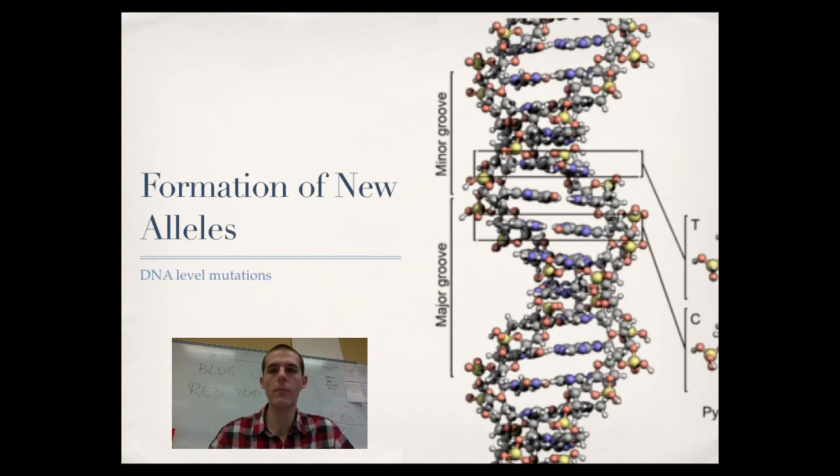All right, let's go ahead and just quickly bounce through a couple of sources of variation. And this should all be review. Just recognize that these sources of variation are the raw material that natural selection uses to cause evolution in a population. So the first one, formation of new alleles. We've talked about this. This is DNA level mutations: point mutations, frame shift mutations, things like that. And as I talk about mutations through this, remember that most mutations are detrimental or they don't cause any change at all. But every now and then you do get one that can be beneficial for survival.